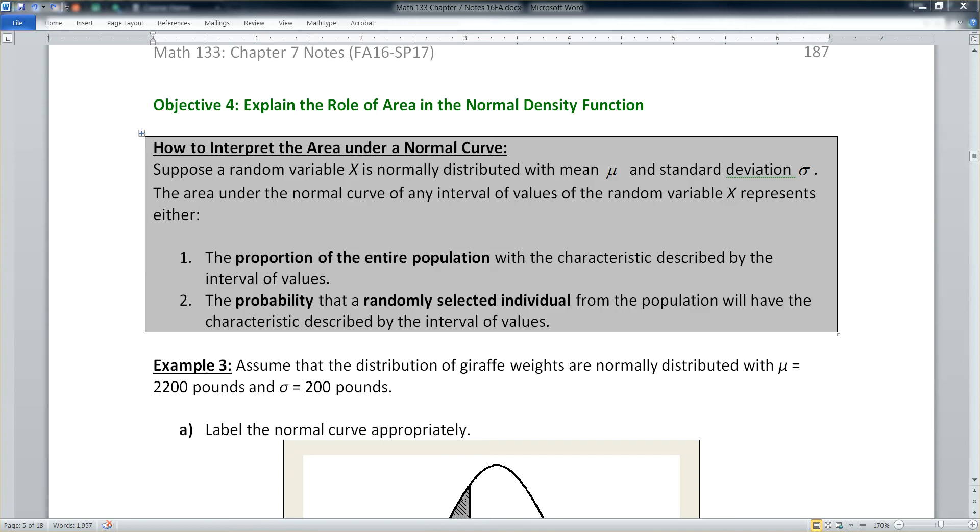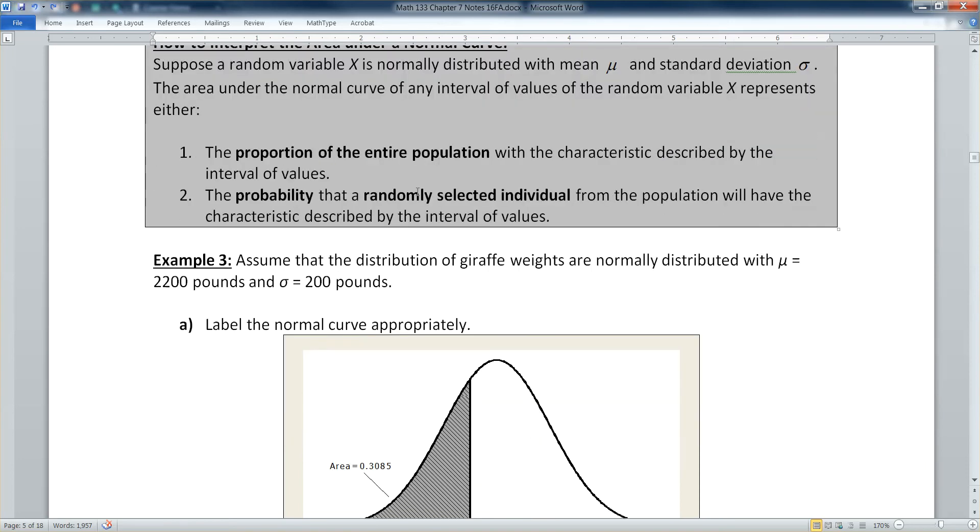In section 7.1, we saw that there are two ways to interpret the area under a normal curve. The first way is to think of that area as the proportion of the entire population that would be within that interval of values. The other way is the probability, the chances that a single individual is in that interval of values.